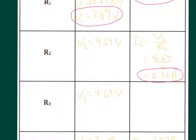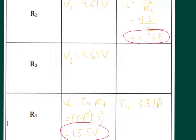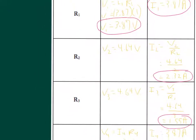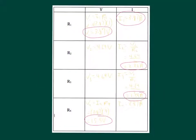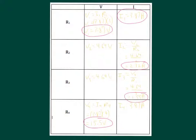For our last box, I3 is V3 over R3, so 4.64 volts divided by 3 ohms, which would be 1.55 amps. We have now solved for all of the information, all of the variables.